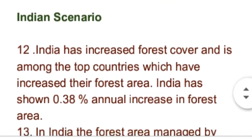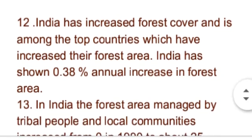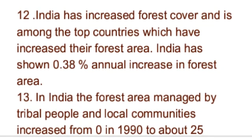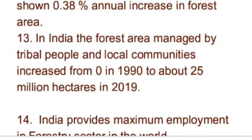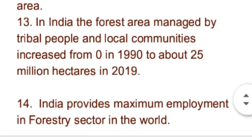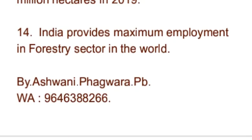India کا forest area increase ہوا ہے اور India ان top countries میں included ہے جن کا forest area بڑھا ہے۔ India کے forest area increase ہونے کی rate 0.38% annual ہے۔ India میں جو forests tribal people یا local communities کے ذریعے manage کیے جاتے ہیں ان کا area 1990 میں 0 تھا اور 2019 میں یہ بڑھ کر 25 million hectares ہو گیا ہے۔ India world کا وہ country ہے جو forestry میں سب سے آگے ہے۔